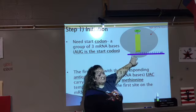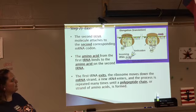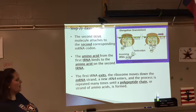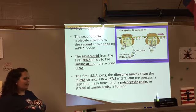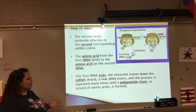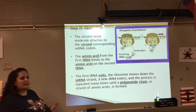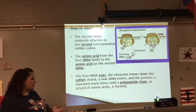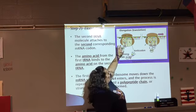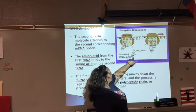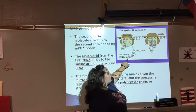In step two, elongation, our second tRNA molecule attaches to the second corresponding mRNA codon. The amino acid from the first tRNA will bind to the amino acid on the second tRNA, and as the first tRNA exits, the ribosome shifts down the mRNA strand. A new tRNA molecule will enter and the process repeats many times until you form a polypeptide chain — a strand of amino acids. For example, a tRNA with the GGC anticodon pairs up with the CCG codon, carrying the amino acid proline, and forms a bond to the first amino acid.